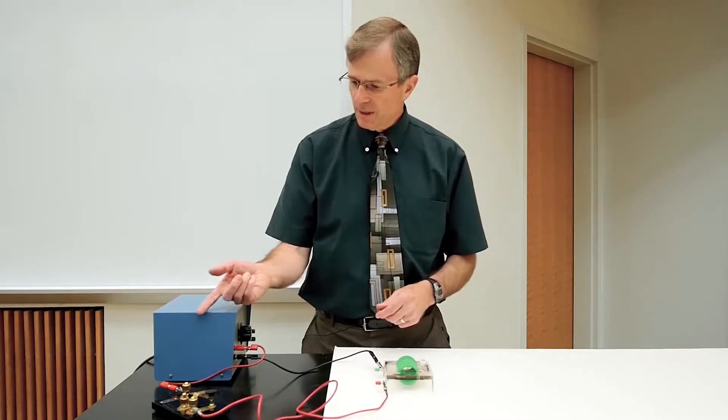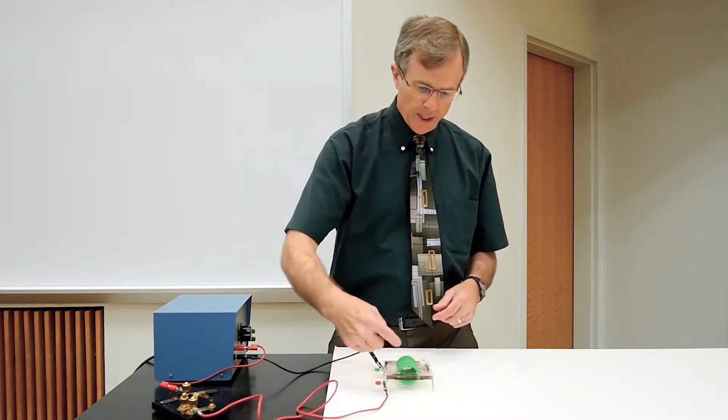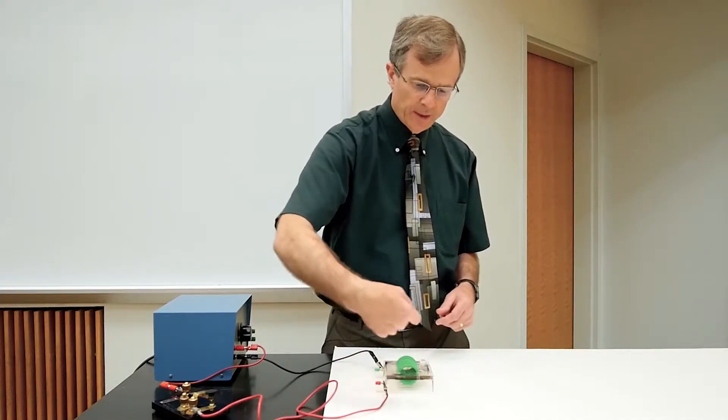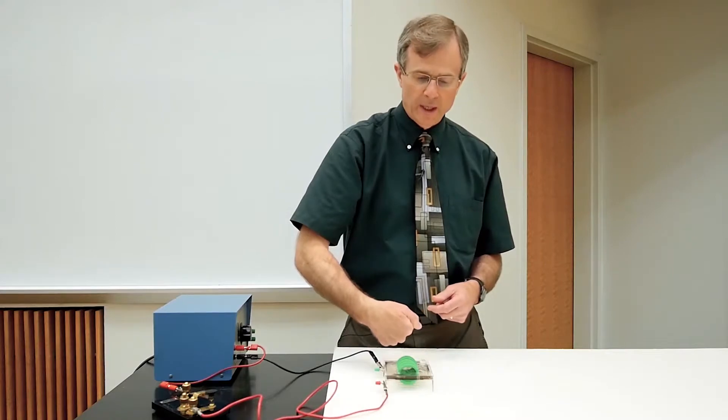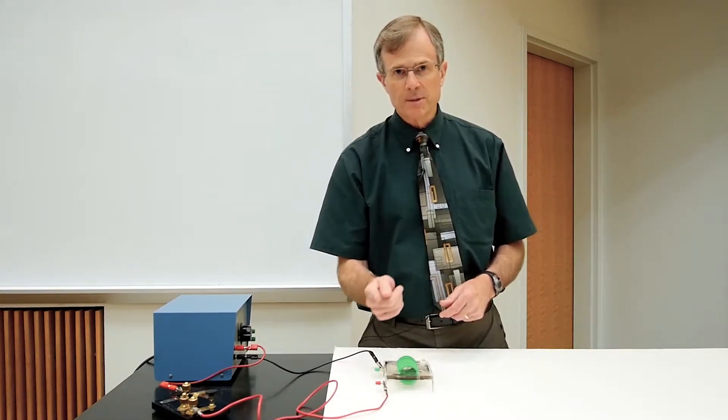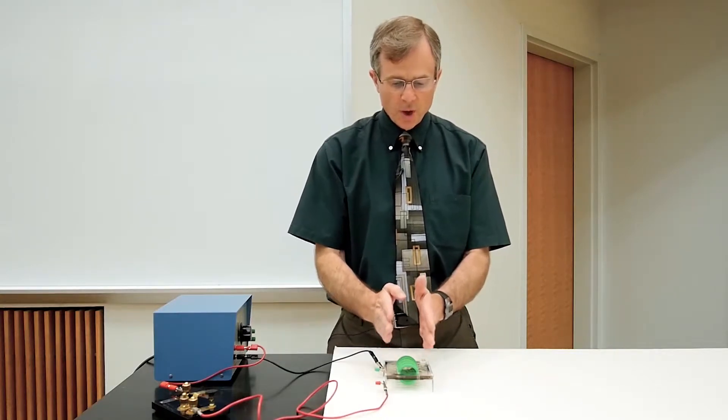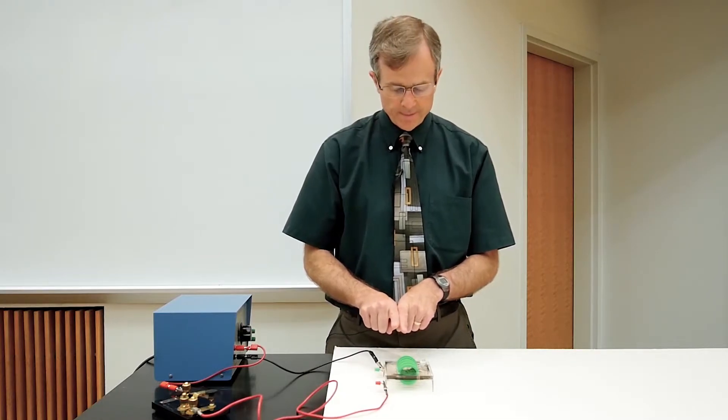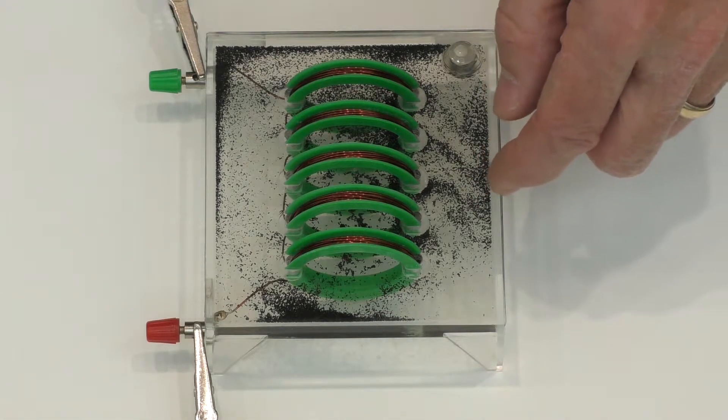If the current comes in from the power source here and goes in this direction, then the magnetic field will be toward me. If the current goes in the opposite direction, then the magnetic field will be toward you. But the strong magnetic field will be in the interior of the solenoid. And we'll visualize that magnetic field using these black iron filings.